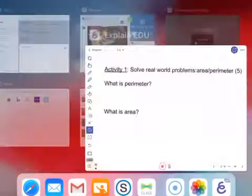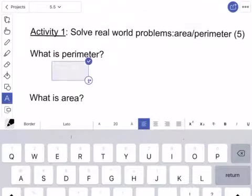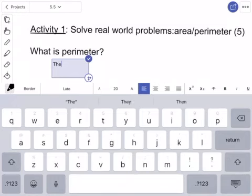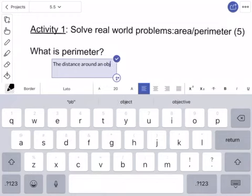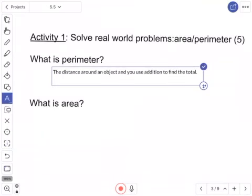We're back here, and we're going to be talking about what is perimeter, what is area. For me, perimeter is the distance around an object and you use addition to find the total. That's what perimeter is.